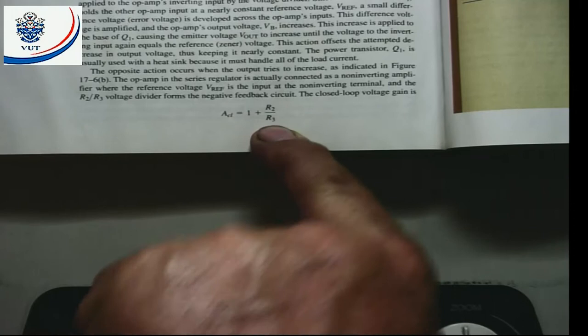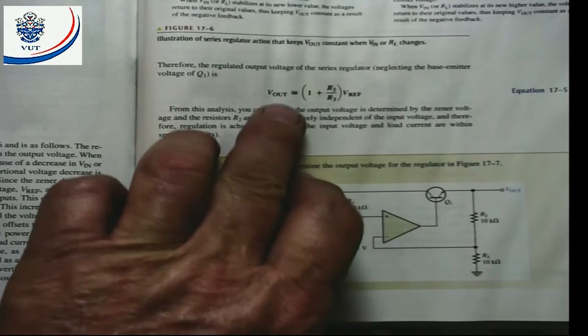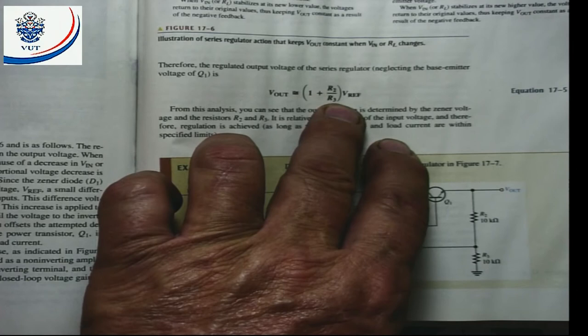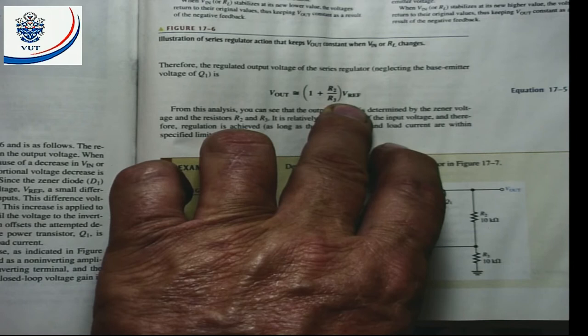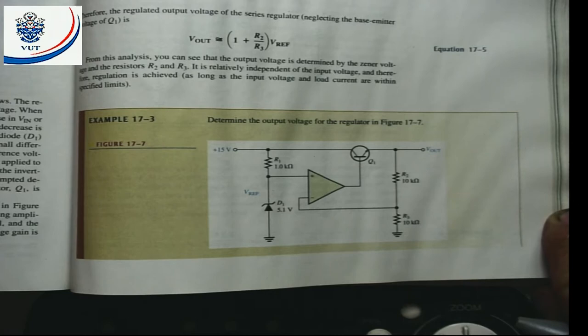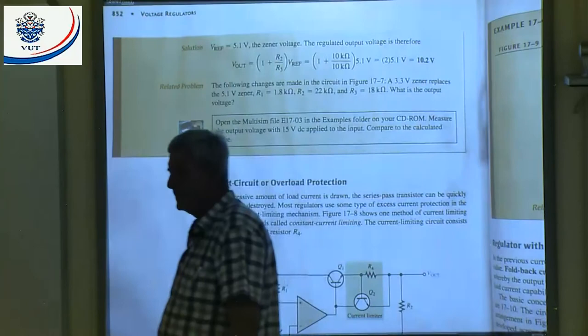This circuit is essentially a non-inverting amplifier, and the closed-loop gain formula is 1 + R2/R3. The output voltage formula is V_out = (1 + R2/R3) × V_reference. With R2 = R3 = 10 kΩ, that gives 2 × 5 volts = 10 volts — which confirms our earlier answer. For example 17.3 using figure 17.7, with a 5.1-volt Zener diode and equal resistors, the output voltage is 10.2 volts.